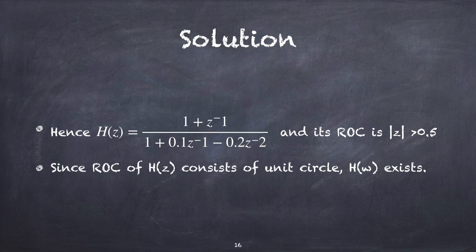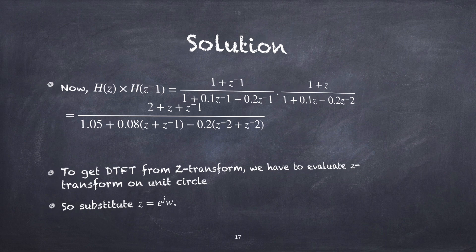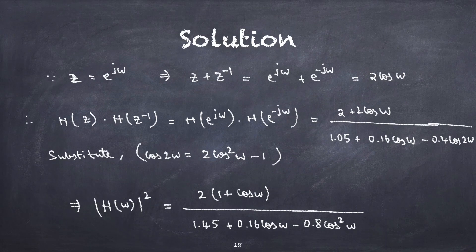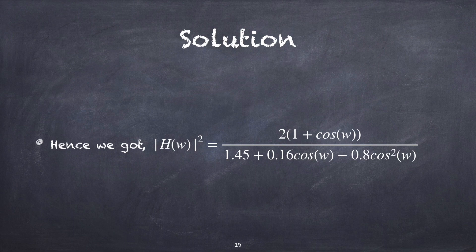Since H(ω) exists, we now calculate |H(ω)|². We compute H(z) · H(z⁻¹) and then substitute z = e^(jω), because the DTFT is obtained by evaluating the Z-transform on the unit circle. On substituting and solving, we finally get |H(ω)|² = 2(1 + cos ω) / (1.45 + 0.16·cos ω − 0.8·cos²ω).